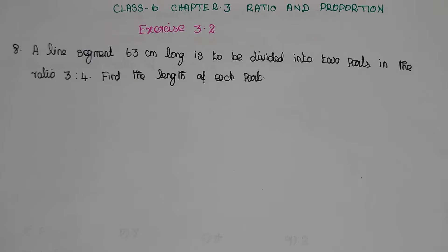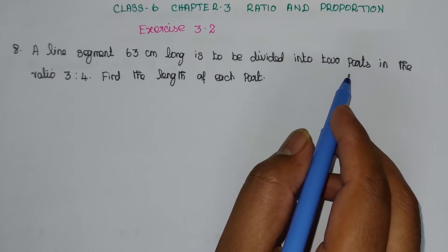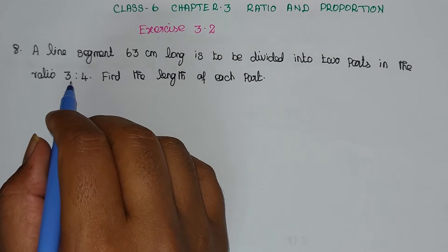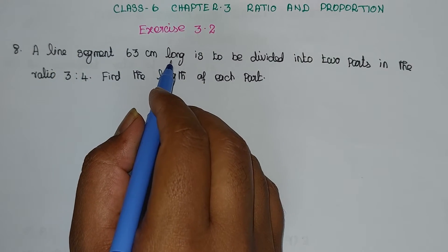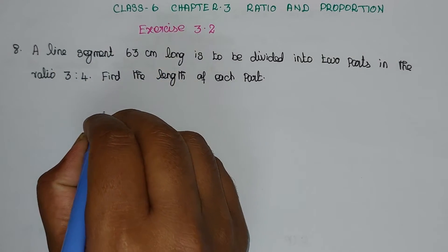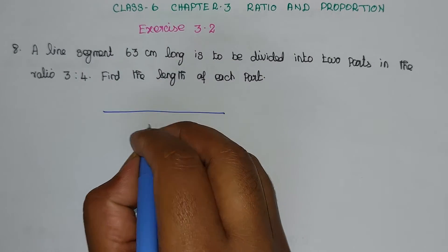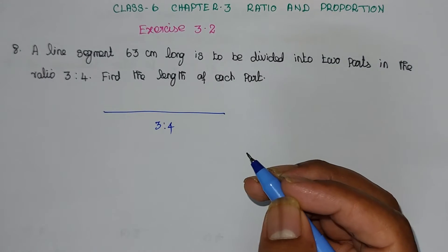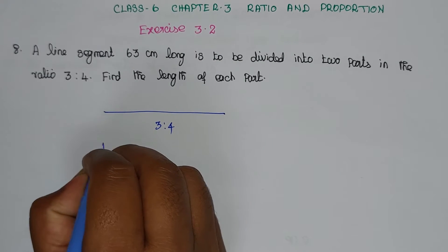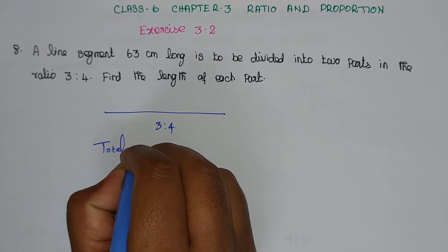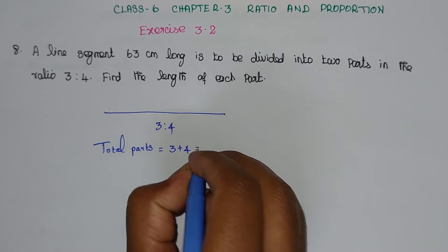We are going to solve Problem number 8. A line segment 63 cm long is to be divided into two parts in the ratio 3 is to 4. Find the length of each part. We cut the line segment in the ratio 3 is to 4.